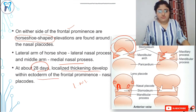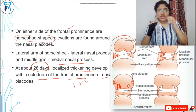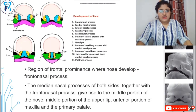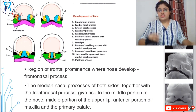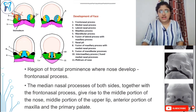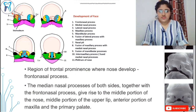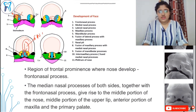At about 28 days, localized thickening develops within the ectoderm of the frontal eminence — these are nasal placards. The nasal placards start thickening on both medial and lateral sides. Here you can see the small medial nasal placard layer and the yellow colored lateral nasal placard. The frontal process is horseshoe shaped. It has nasal placards in the front and a lens placard on the side — the eye lens will develop from the lens placard in the future. The region of the frontal prominence where the nose develops is the frontal nasal process.